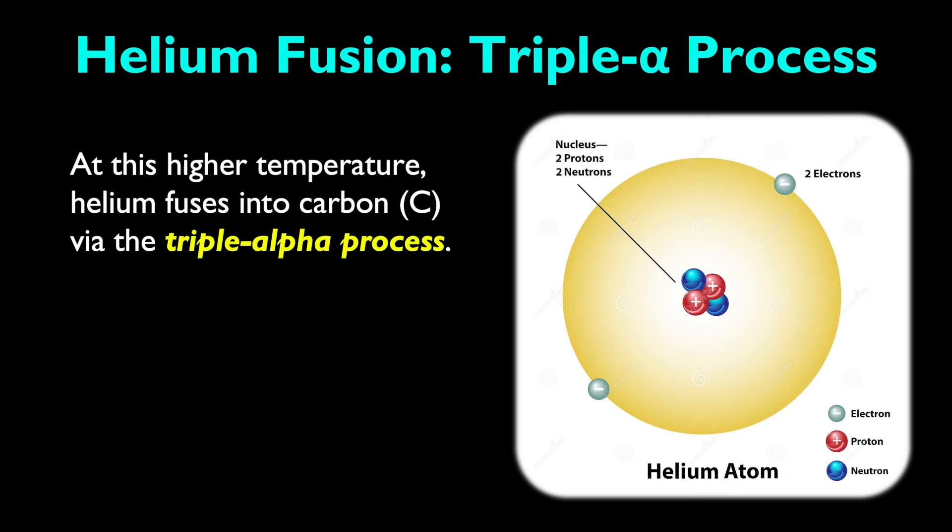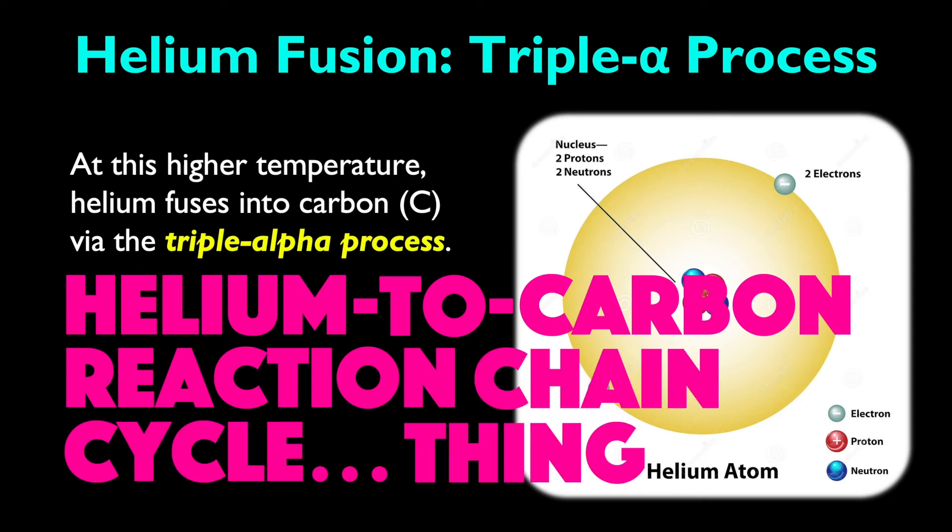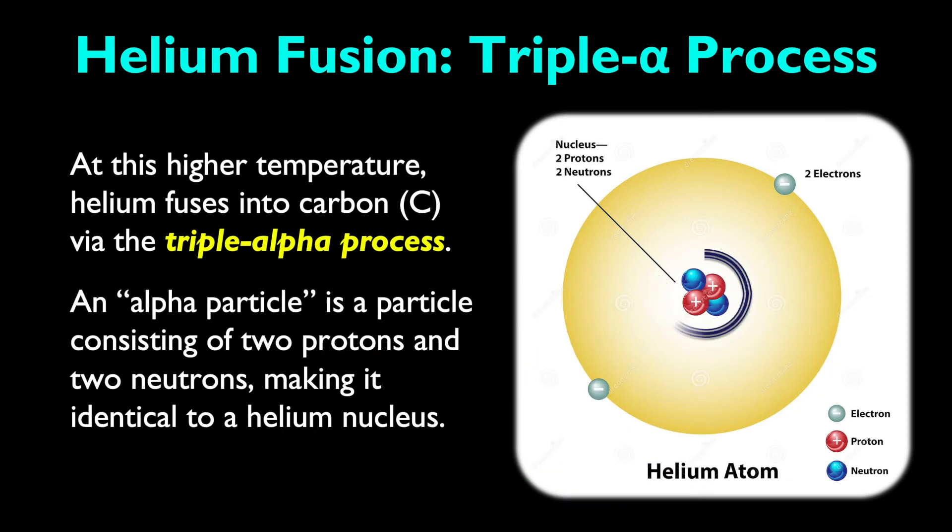Now, you might be wondering why it's called the triple alpha process instead of something like helium to carbon reaction chain cycle thing. But the reason is that an alpha particle is a particle consisting of two protons and two neutrons, making it essentially identical to the helium nucleus itself. So, let's dive into the triple alpha process and see what it's all about.